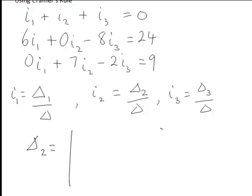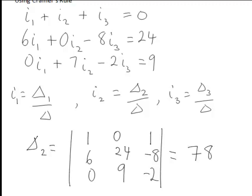Delta2: the constants go into the second column and then the coefficients of i1, which are 1, 6, 0, are in the first column. Coefficients of i3, which are 1, negative 8, negative 2, are now in the third column and that determinant works out to be 78.